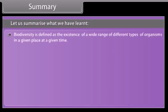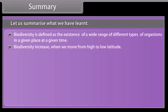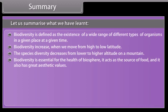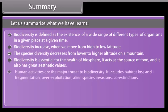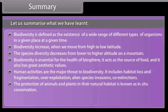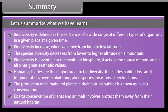Summary. Biodiversity is defined as the existence of a wide range of different types of organisms in a given place at a given time. Biodiversity increases when we move from high to low latitude. Species diversity decreases from lower to higher altitude on a mountain. Biodiversity is essential for the health of the biosphere and acts as the source of food with great aesthetic values. Human activities are the major threat to biodiversity, including habitat loss and fragmentation, overexploitation, alien species invasions, and co-extinctions. The protection of animals and plants in their natural habitat is known as in-situ conservation. Ex-situ conservation involves protecting them away from their natural habitat.